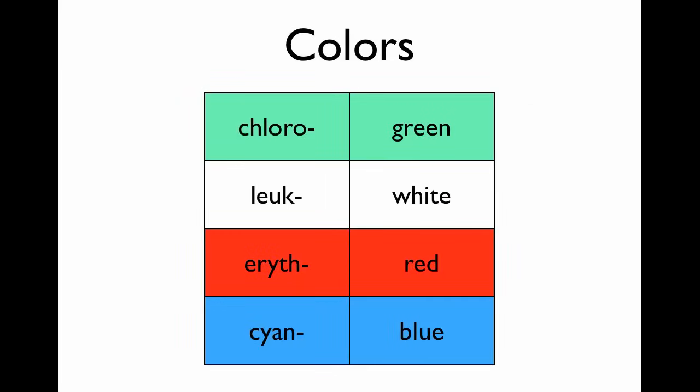We also have a lot of prefixes relating to color. Chloro — like chlorophyll in plants — is green. Leuko is white; you see that in leukocytes. Red is erythro — erythrocytes are red blood cells. And cyan is the color blue, as in cyanobacteria — the blue-green algae you may have seen in general biology.